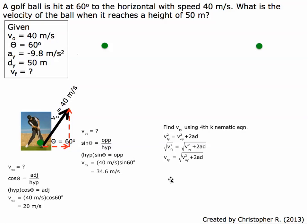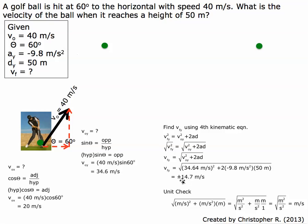Putting in our numbers: 34.64 meters per second squared plus 2 times the gravitational acceleration of negative 9.8 times a height of 50 meters. We have two results here — one positive and one negative — corresponding to the two points at 50 meters height. Let's do a unit check: meters per second squared times meters gives meters squared over second squared, and taking the square root gives meters per second, which is correct.